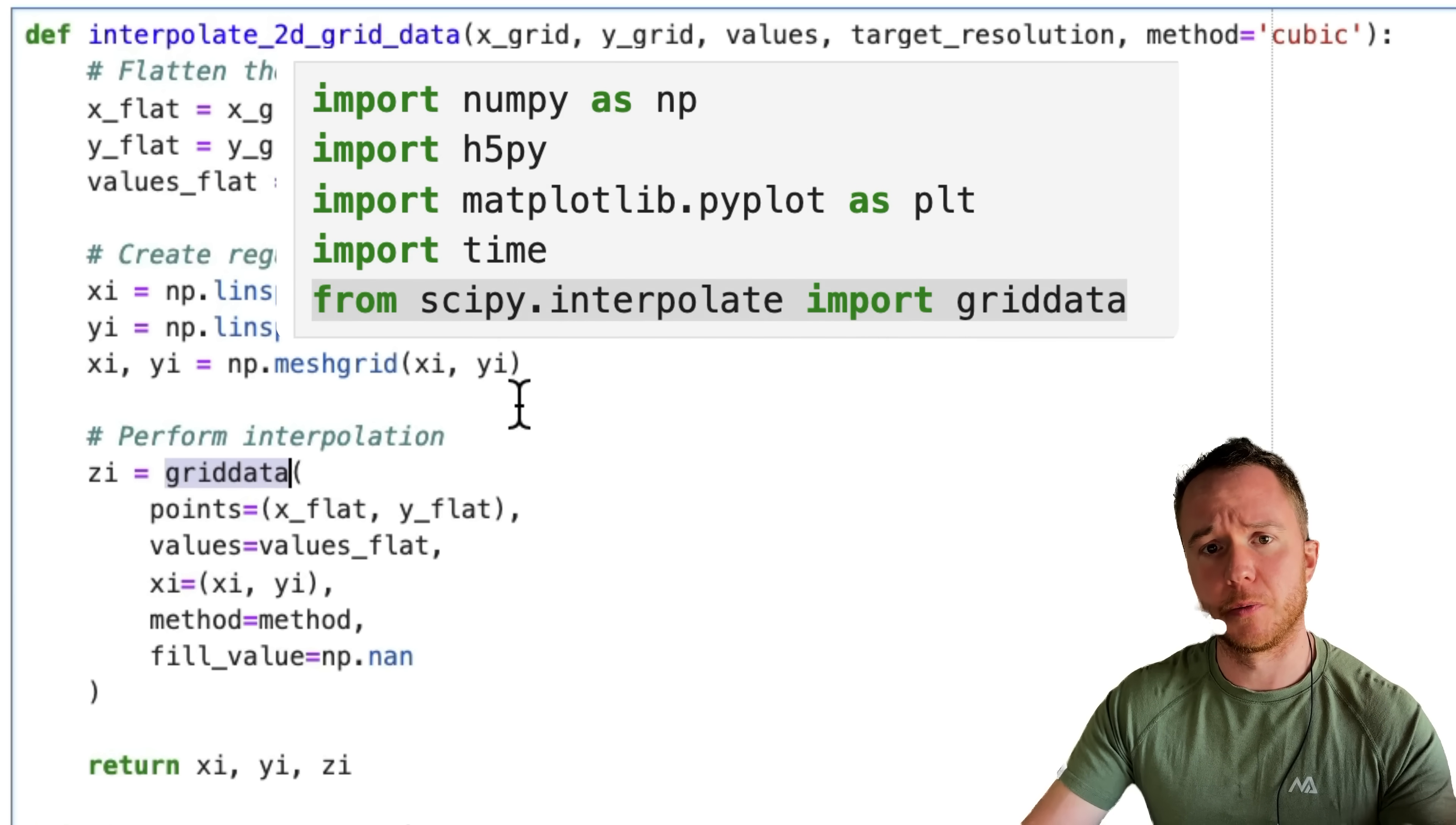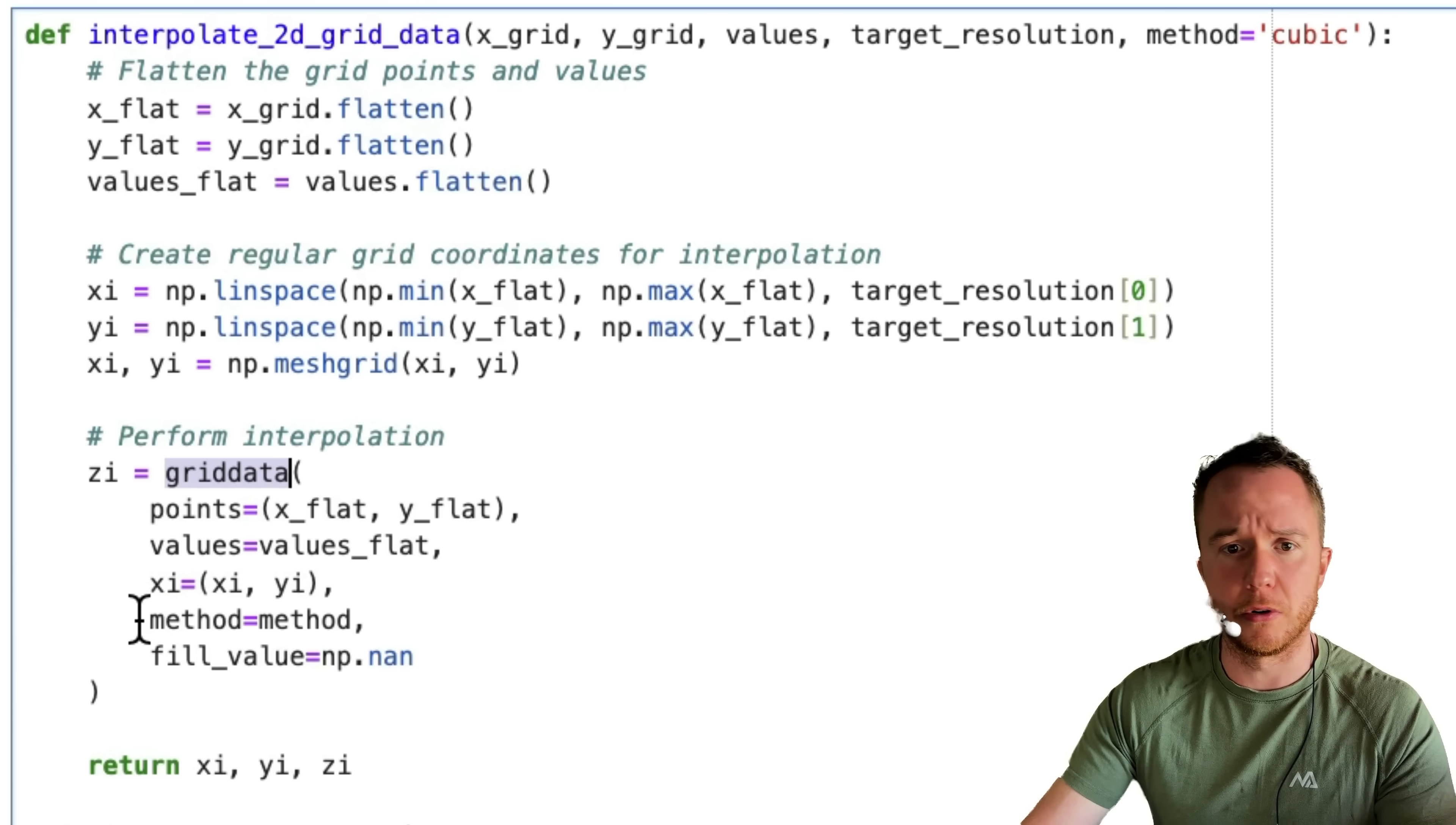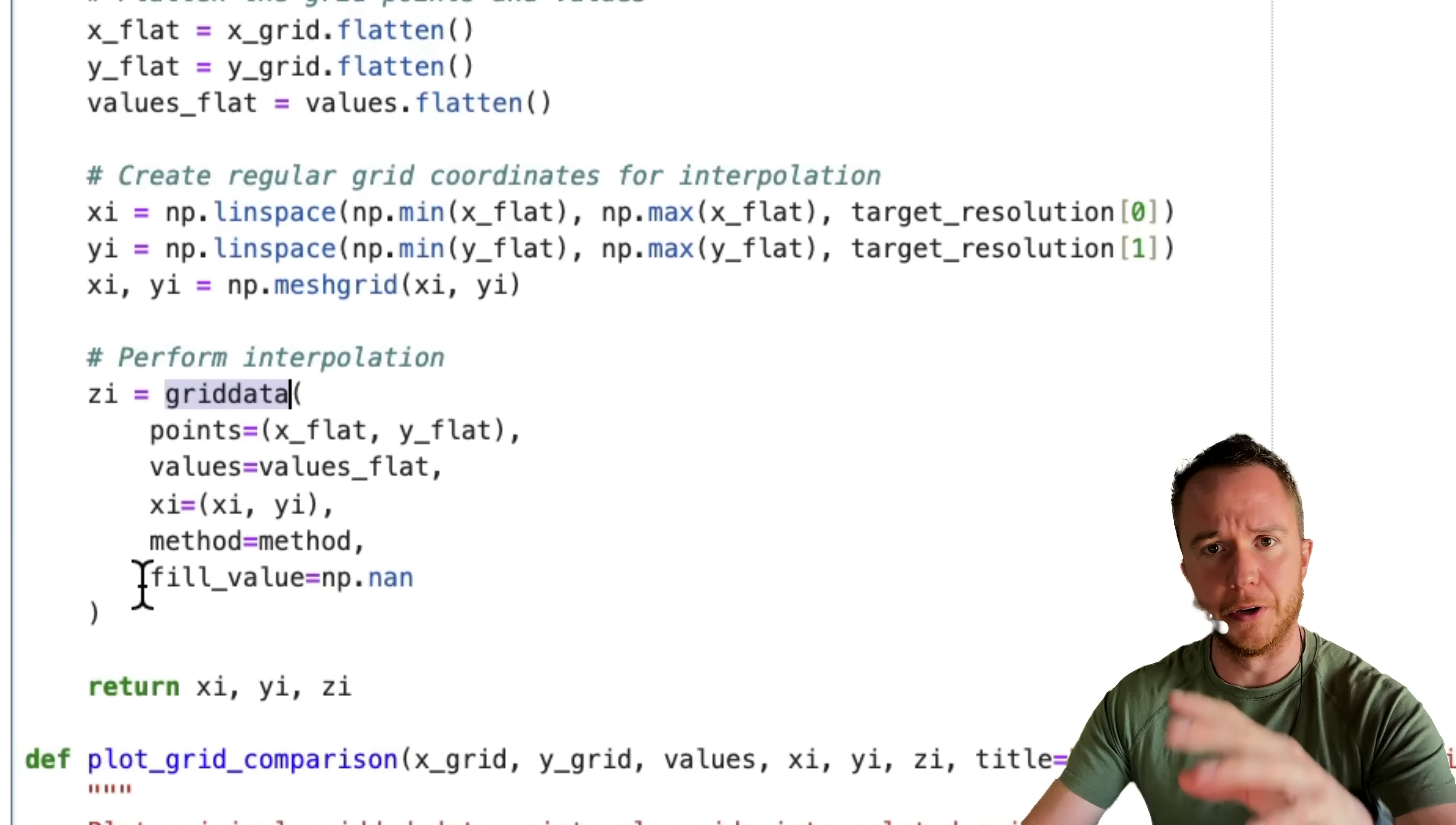We use the grid data function that comes from SciPy. As input arguments, we give it the points, so our flattened x and y grids, the values that we had before, the interpolation grids in x and y direction, the method, so whether we use cubic or linear or some other interpolation scheme, and we select the fill value to be none, so in case it can't interpolate, it will fill it with none.